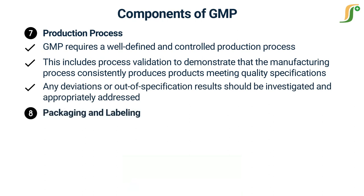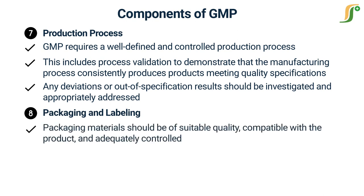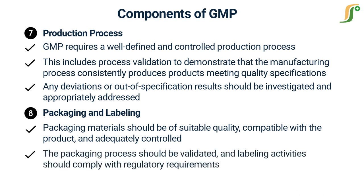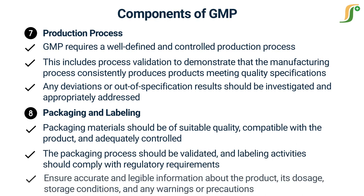The eighth component is Packaging and Labeling. GMP extends to the packaging and labeling of pharmaceutical products. Packaging materials should be of suitable quality, compatible with the product, and adequately controlled. The packaging process should be validated, and labeling activities should comply with regulatory requirements, ensuring accurate and legible information about the product, its dosage, storage conditions, and any warnings or precautions.